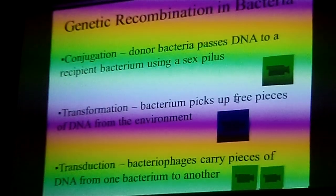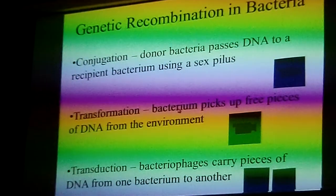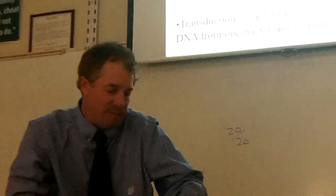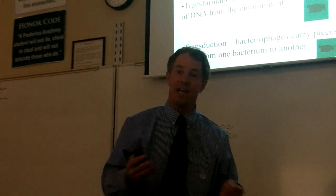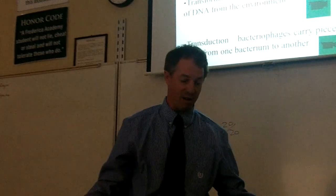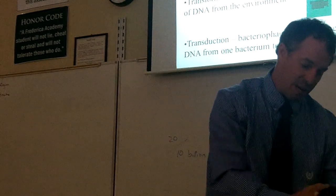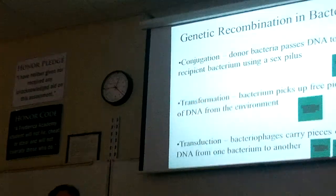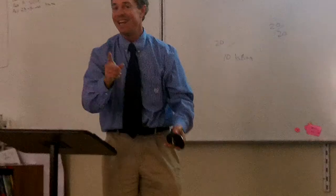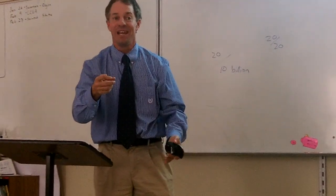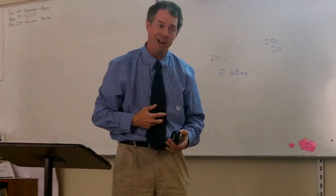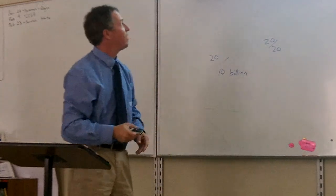Transformation is when bacteria pick up free pieces of DNA from the environment. What bacteria will do if they feel they're in trouble is pick up pieces of DNA from their surroundings. DNA can be laying all over from when organisms die — if a cell dies, its DNA spills out, and if another bacterium swims up to it and picks it up, that's a transformation. In our experiment, we squirted plasmids onto the bacteria and gave them a heat shock. That scared them into picking up DNA from their environment — so some of them picked up the plasmid. Not all of them, just some.